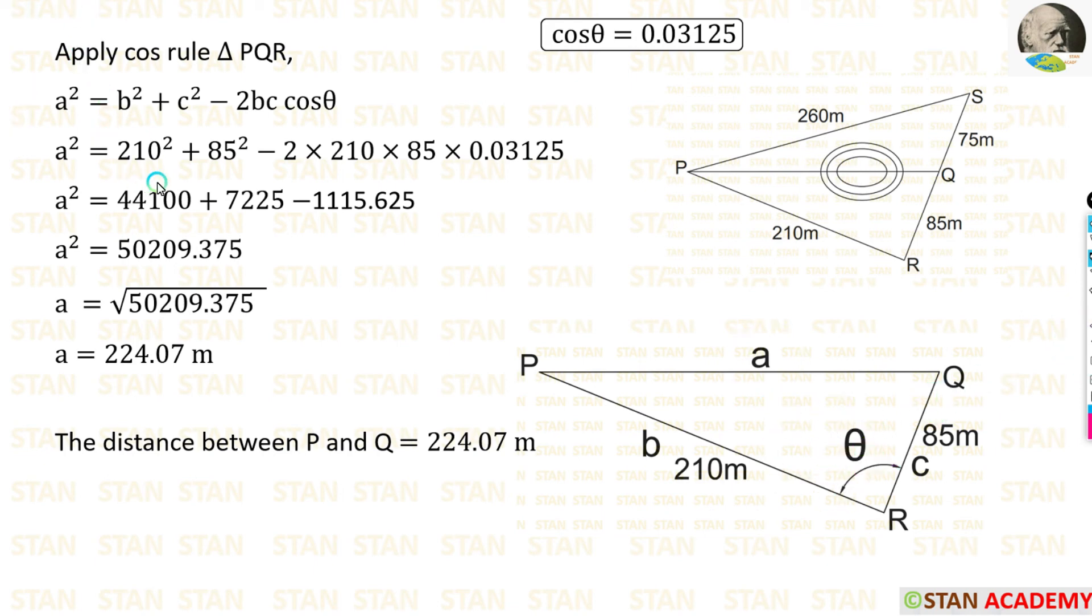We can apply the values here. B is the distance of PR, that is 210 meter. C is the distance of QR, that is 85 meter. Finally we are getting for A², 50209.375. Then we can take square root on both sides. Finally we are getting A = 224.07 meter.